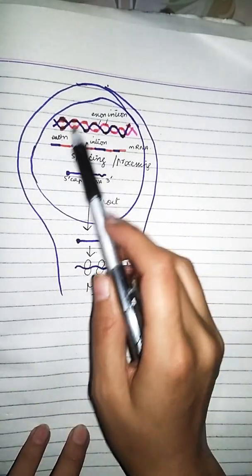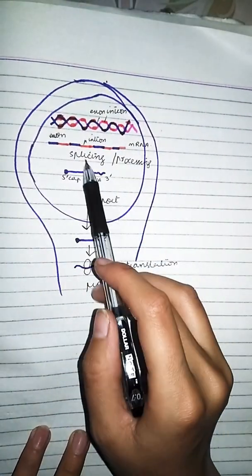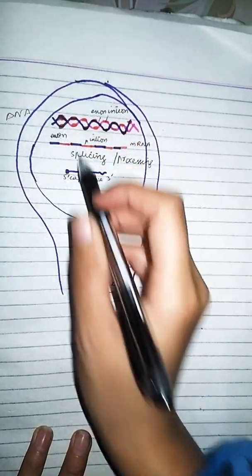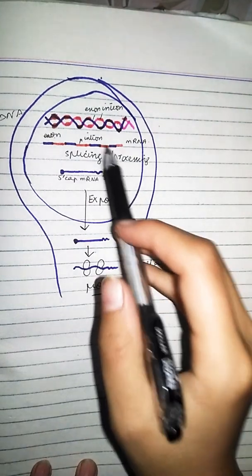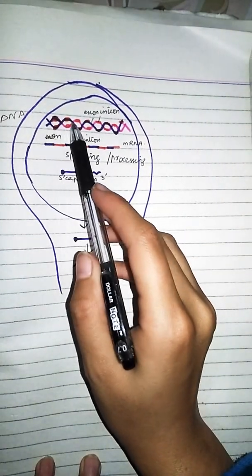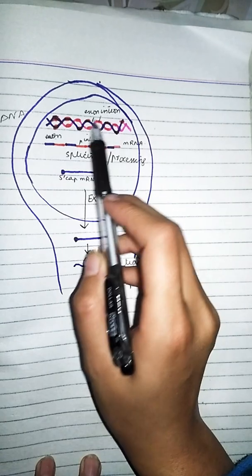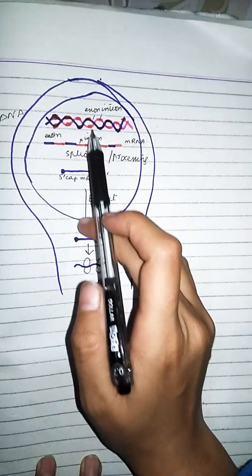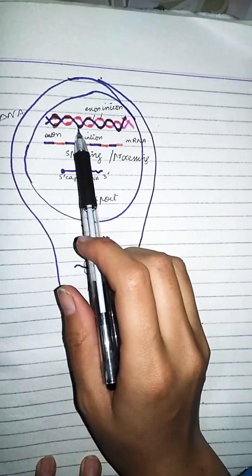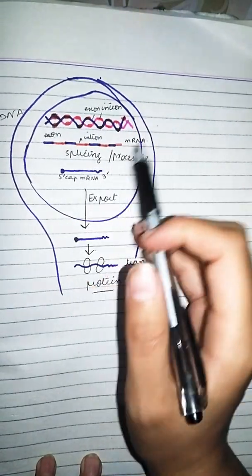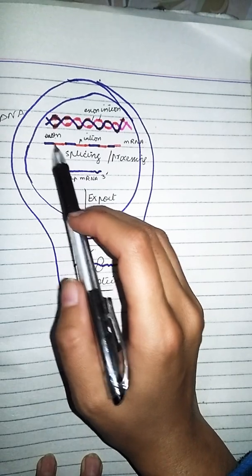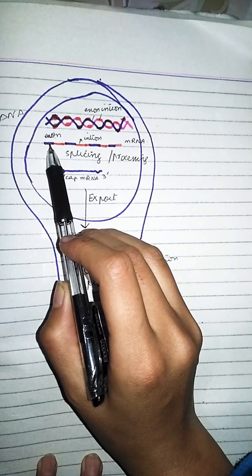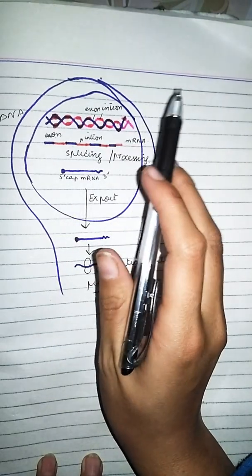اب یہ diagram دیکھتے ہیں — یہ nucleus ہے جس میں DNA present ہے۔ جو reddish color کا دکھائی دے رہا ہے یہ intron ہے، باقی جگہ exon present ہوتے ہیں۔ Pattern یہ ہے: exon سے start ہوتا ہے، پھر intron، پھر exon، اور آخر میں بھی intron آ سکتا ہے۔